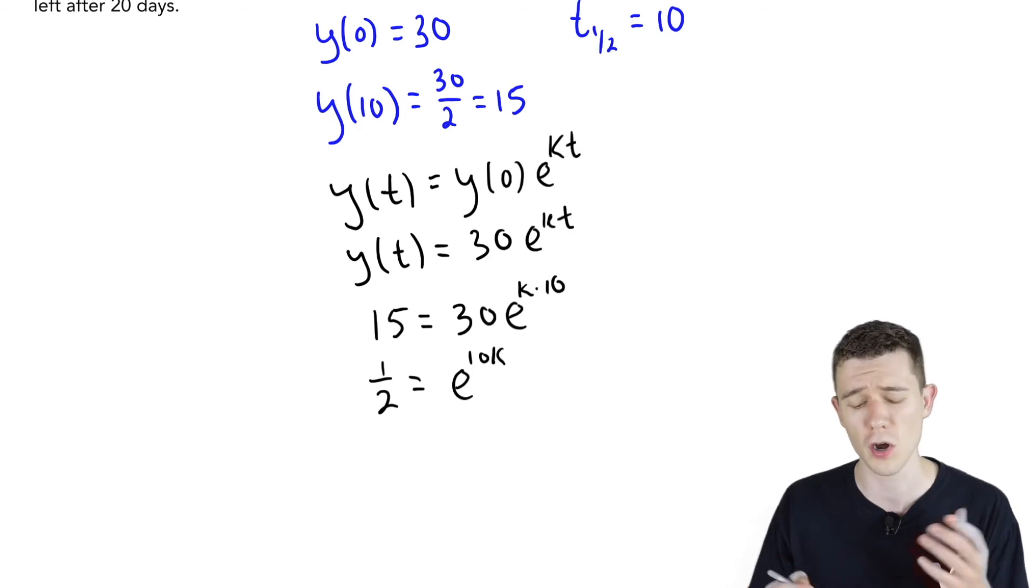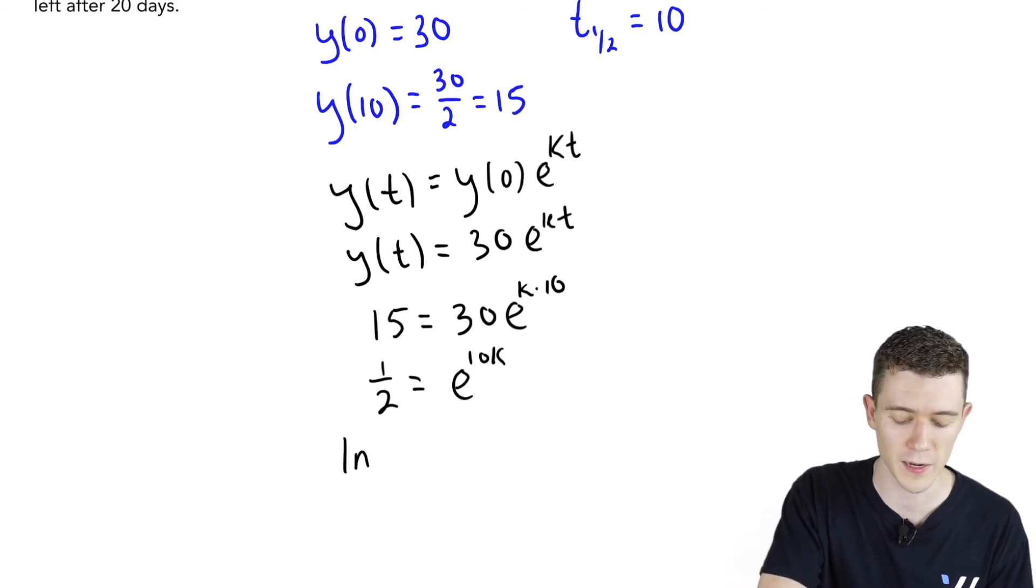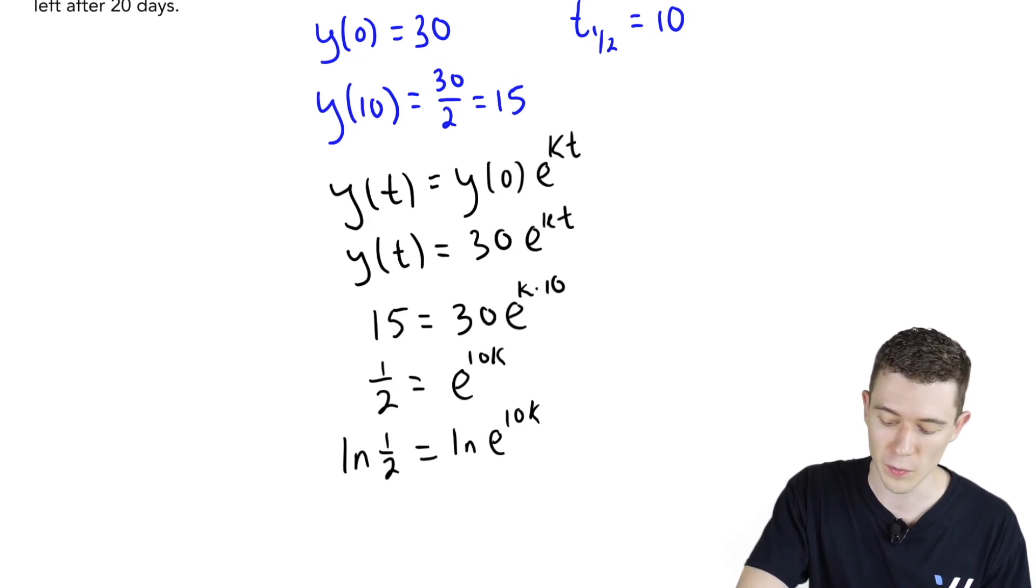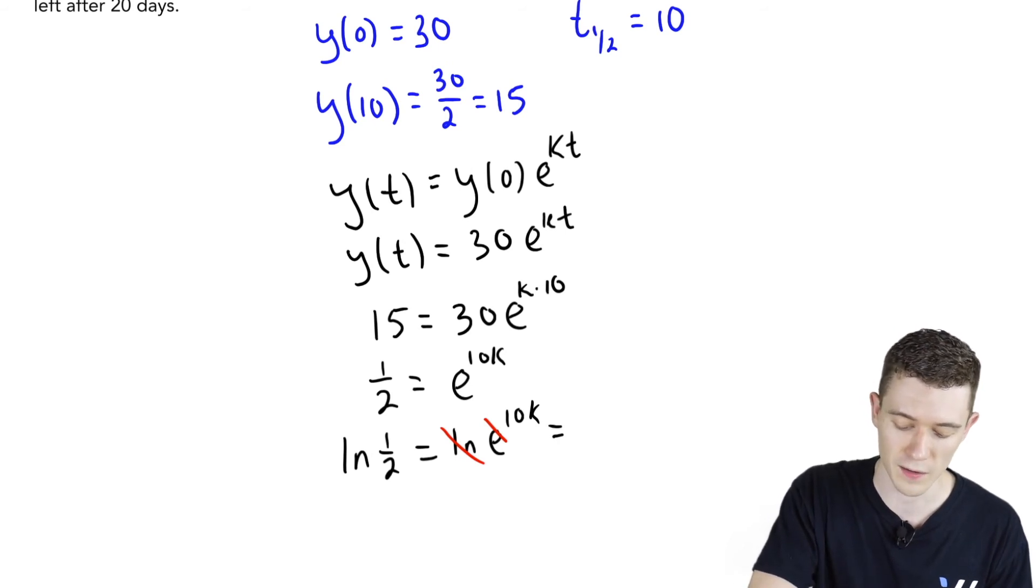Let's go ahead and take the natural logarithm of both sides to undo that e. Natural log of a half is natural log of e to the 10k. We do that because ln and e undo each other. We just get 10k.